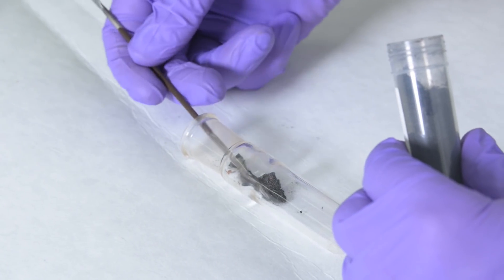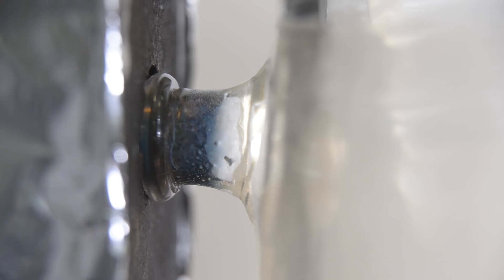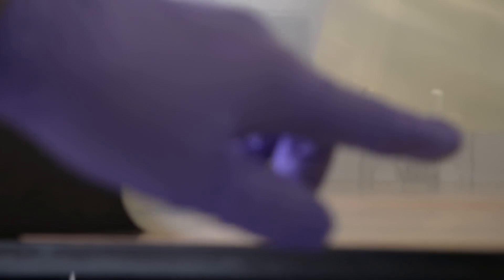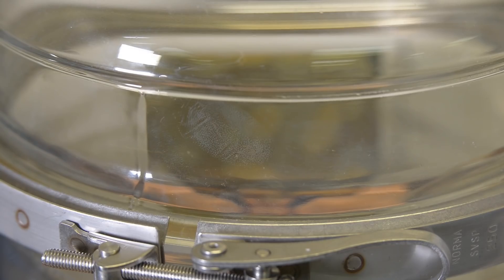So the process works by starting with the precursor in a test tube here. That's heated. The fumes from the degradation of the precursor come down into the chamber and condense on the base of this chamber here. Once we've got the crystallization at the bottom, we allow that to re-evaporate and the fumes from that re-evaporated material will develop the fingerprints on the sample.